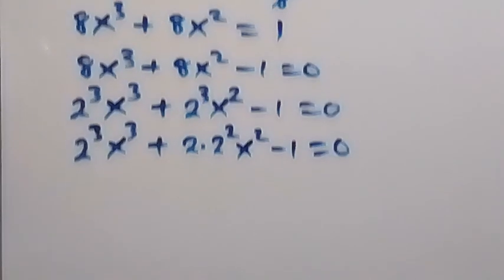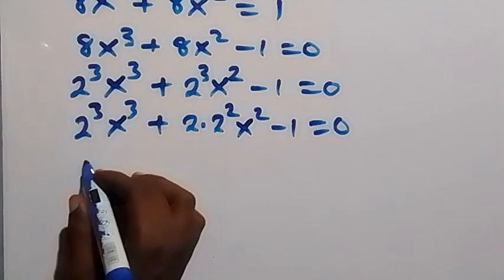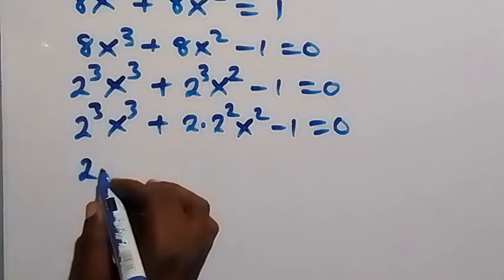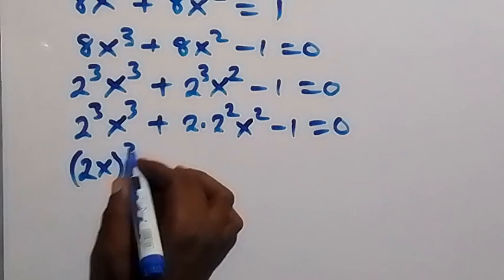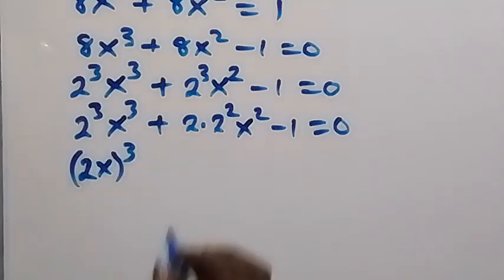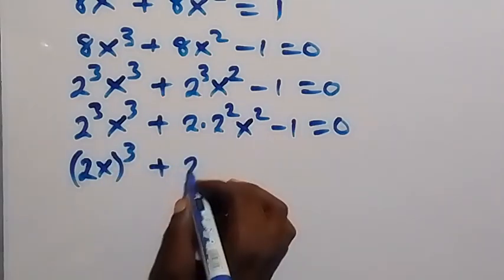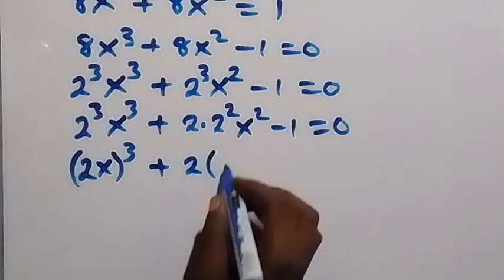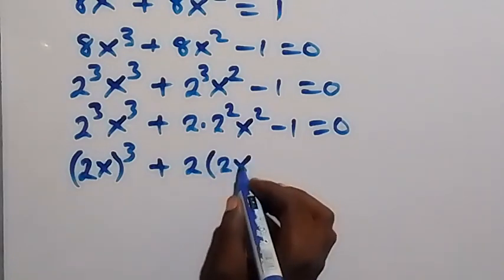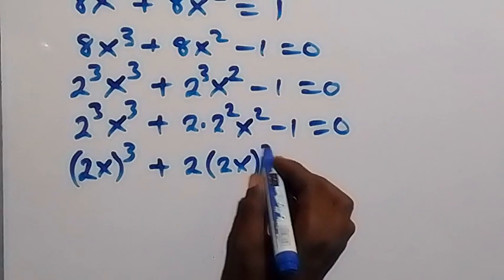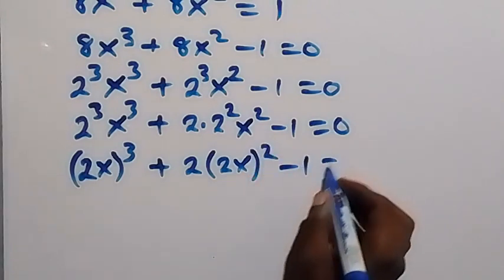From here we have the same power of 3, so we can bring it out and say 2x raised to the power 2, raised to the power 3, from the law of indices. Then plus 2 into bracket 2x raised to the power 3, raised to the power 2 rather, then minus 1 equals to 0.